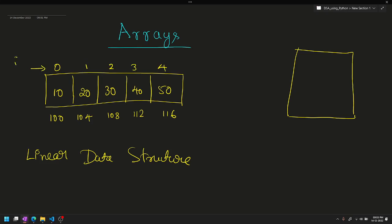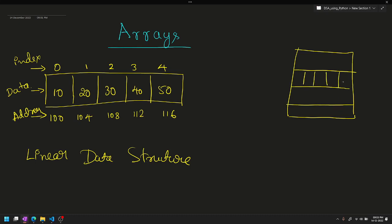The array index starts at 0. Index 1 corresponds to the next element. The array stores miniature data sequentially. The data type determines the size. This memory is stored in continuous memory locations — 104, 108, and so on — continuing to store elements one after another.